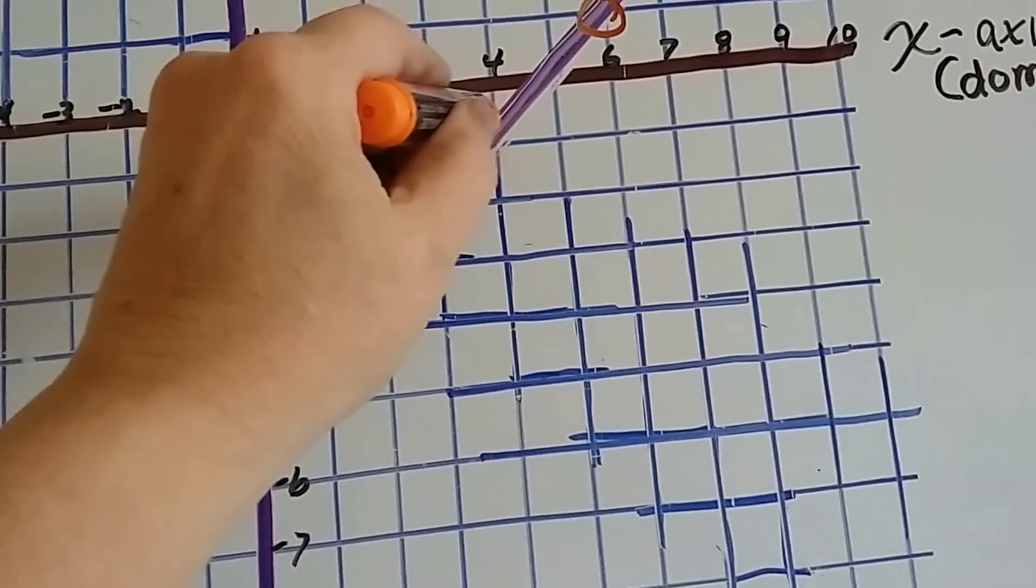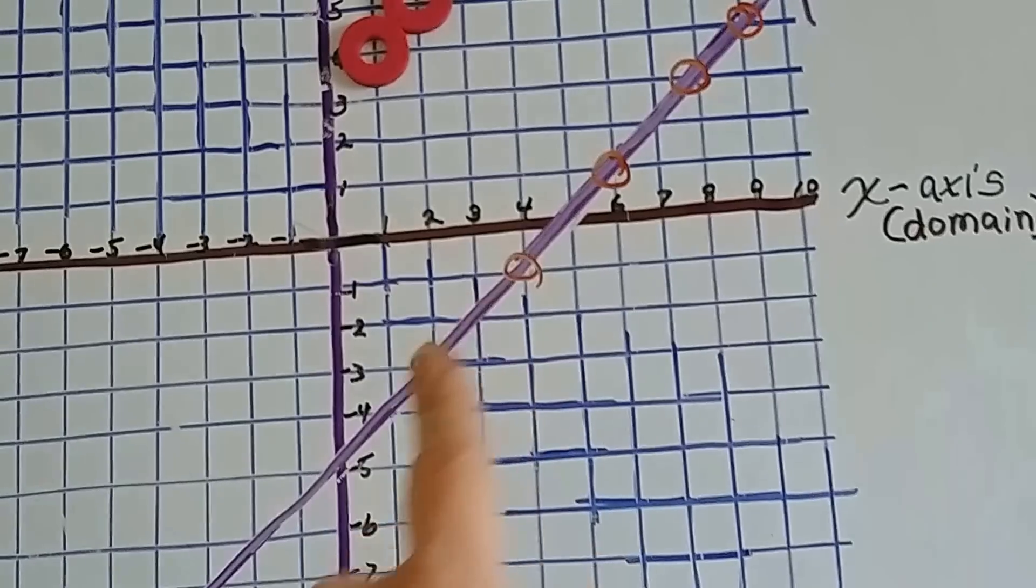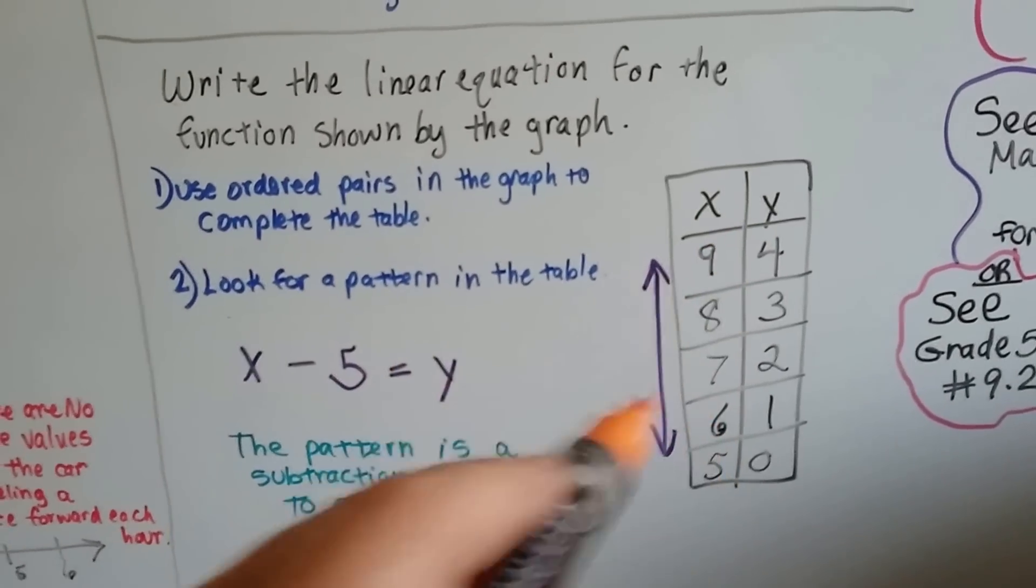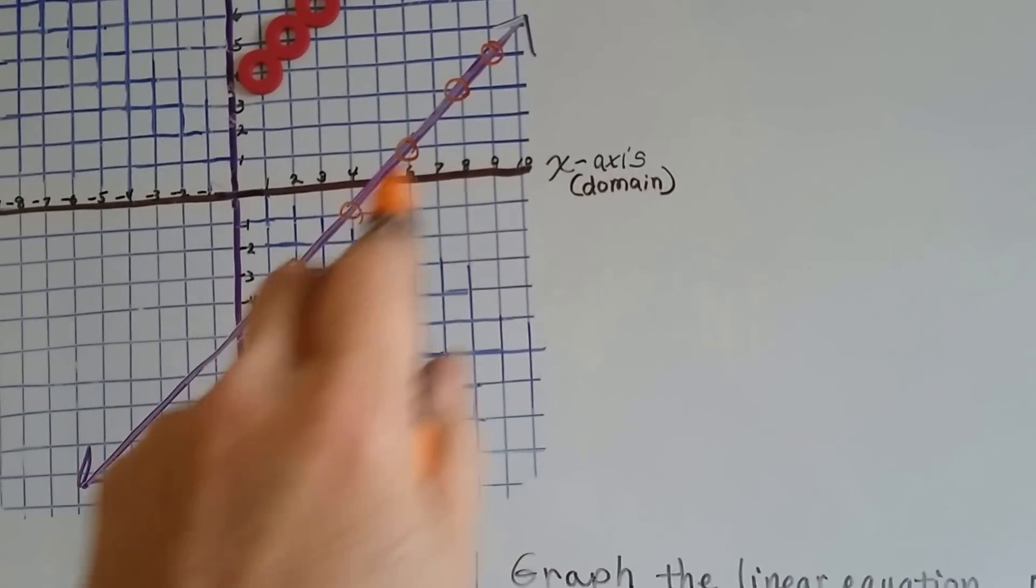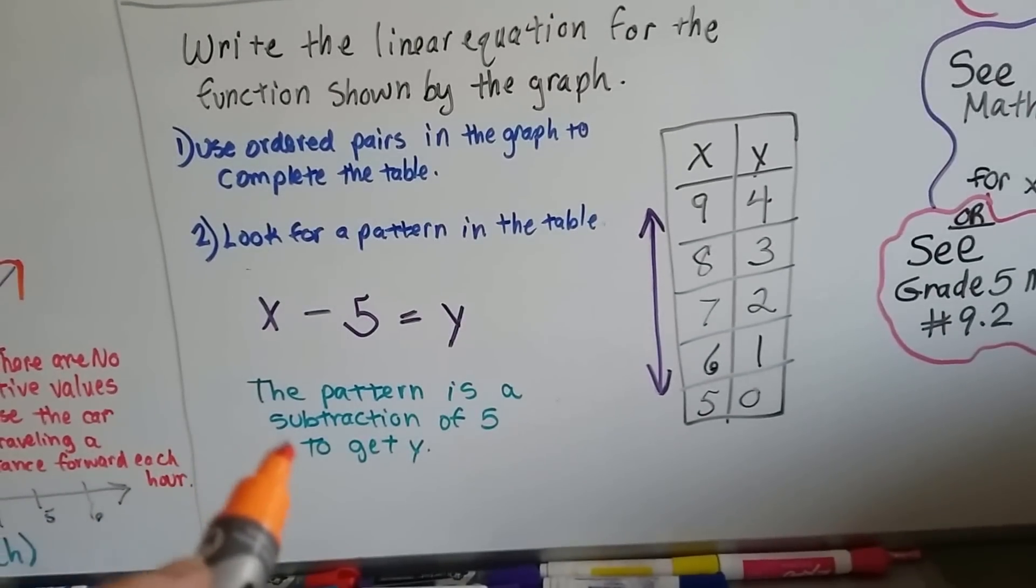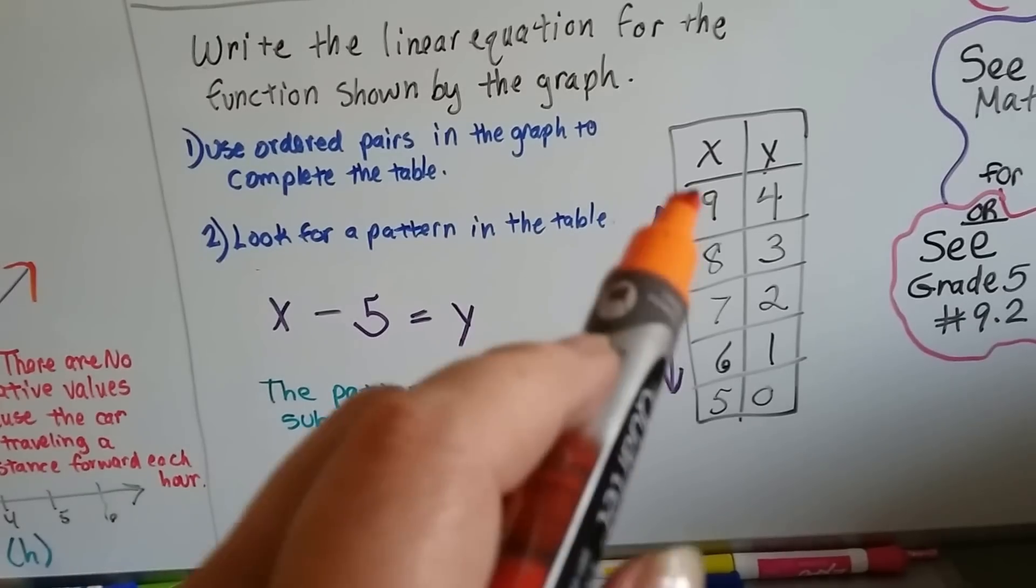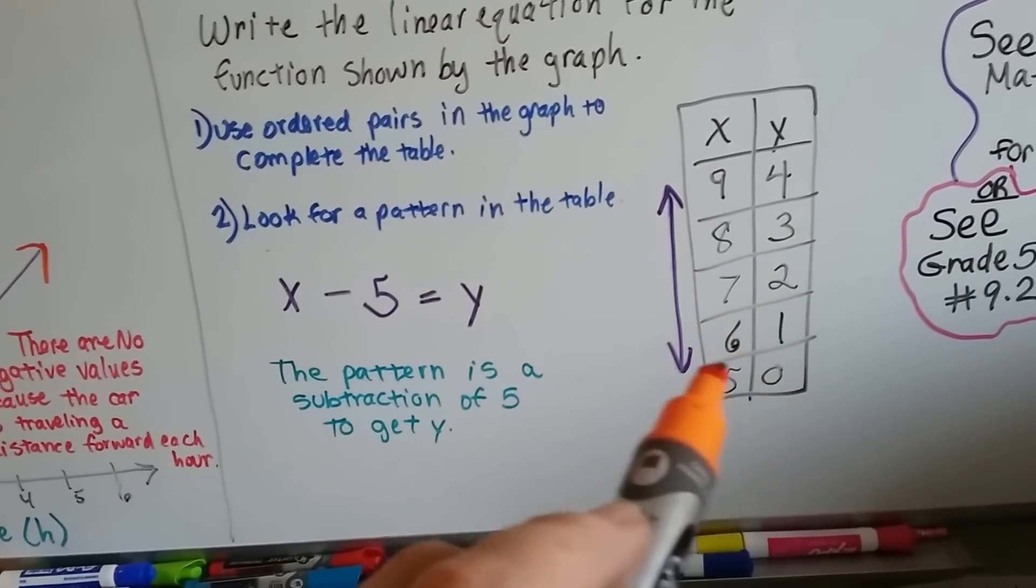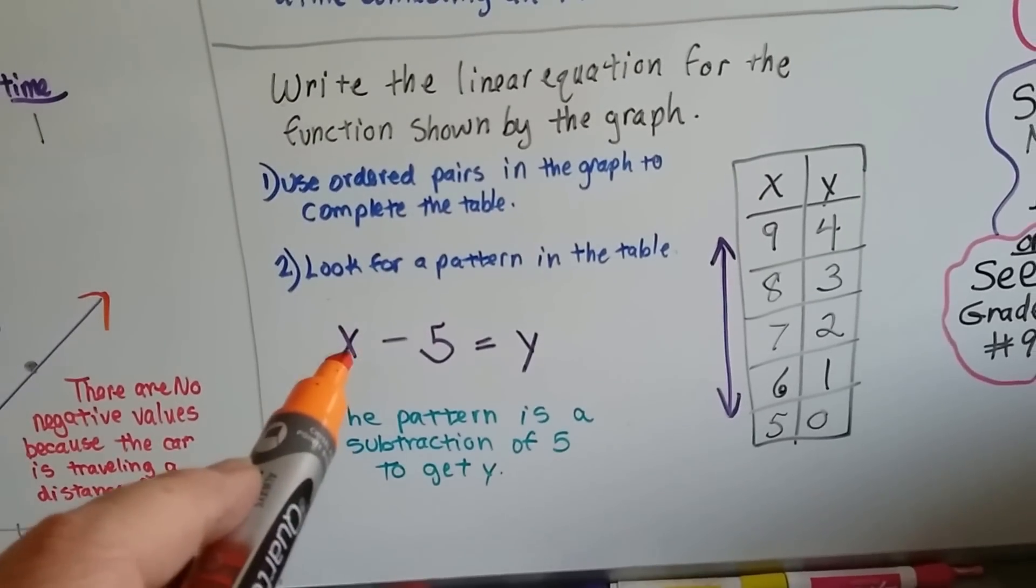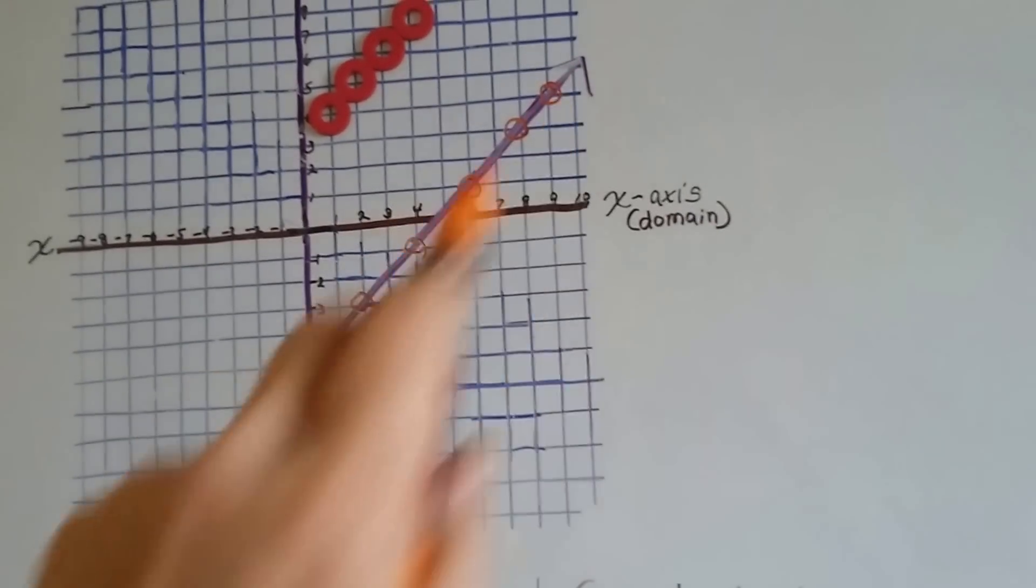And look, I've got 4 and negative 1. And I've got 2 and negative 3. And then I could just keep going on down the line. Well, I did it with all positive numbers to make it easy. And I wrote the ordered pairs that I found on the line in my table. And I looked for a pattern. And the pattern is that there was a subtraction of 5 to get to y. So x minus 5 equals y. 9 minus 5 is 4. 8 minus 5 is 3. 7 minus 5 is 2. x minus 5 is going to equal y. So I was able to write this linear equation x minus 5 equals y. And that fits the line that was given to me on the graph.